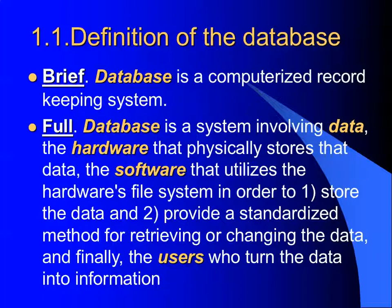We need to identify what a database itself is. We can find multiple definitions from different authors and textbooks, since it's a well-known and widely studied topic. I propose two: one very simple, and one a little more detailed. Simply, we can see a database as a computerized record-keeping system. More detailed: a database involves data, hardware that physically stores the data — we consider hardware components as part of the database itself — and software that utilizes it with two major goals: first, to store data; and second, to provide standardized methods for retrieving or changing data. Finally, the last component is, of course, users.